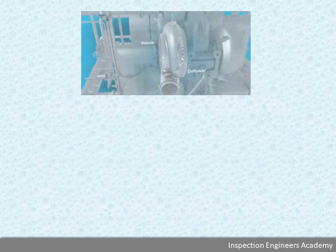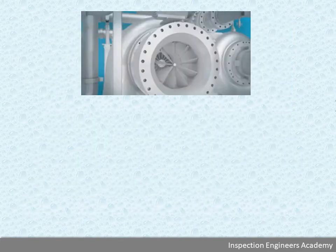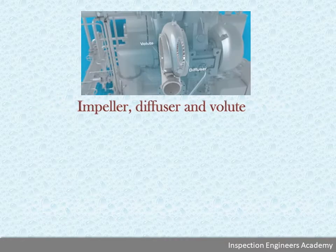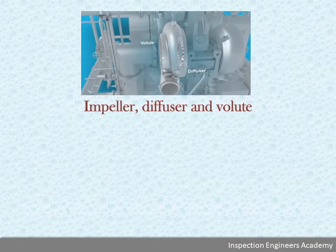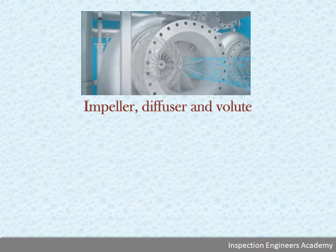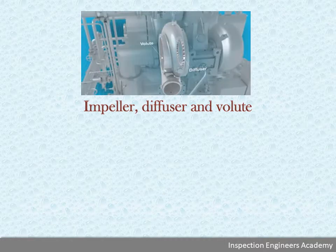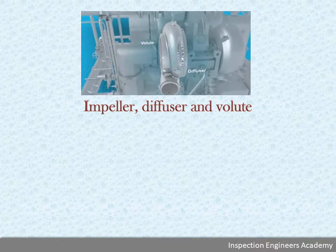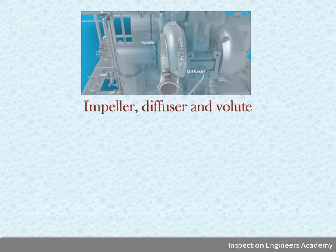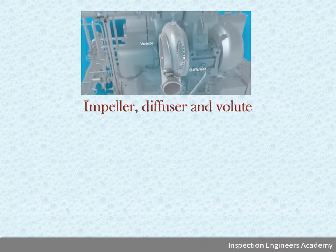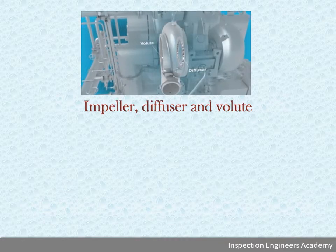The centrifugal compressor could be single-stage or multi-stage. Each stage basically consists of an impeller, a diffuser, and a volute. The impeller is the rotating element, and the diffuser is the stationary element.